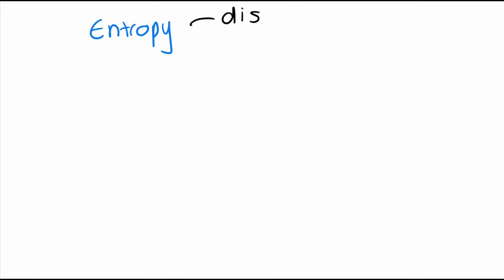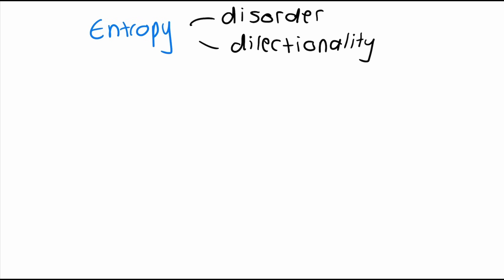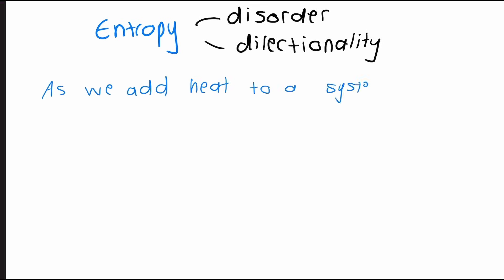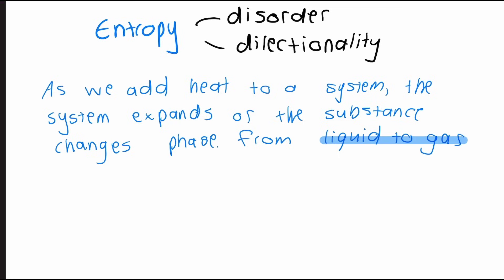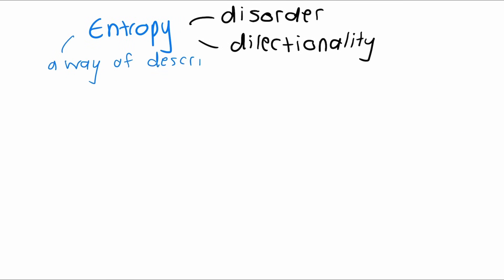First, we need to talk about entropy. Entropy is a way to describe disorder or chaos and directionality within a system. As we add heat to a system, something predictable happens — the system expands or a substance changes from liquid to gas, and always in that order. Thus, we use entropy to describe the directionality of a process. Entropy is also a way to describe or measure the flow of energy.